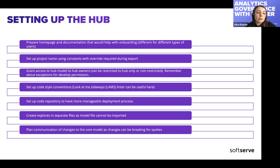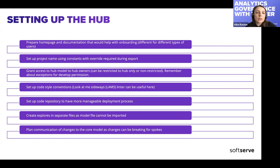The advice is to create explores in separate files and follow all general best practices for developing LookML — using block structure, etc. It's important to remember that the model file cannot be imported, which is why it's good to keep explores separately. Everything should be documented. In Looker, you can set up a home page for different user groups, providing a kind of landing page for spoke users, spoke developers, and hub developers — which helps speed up onboarding.